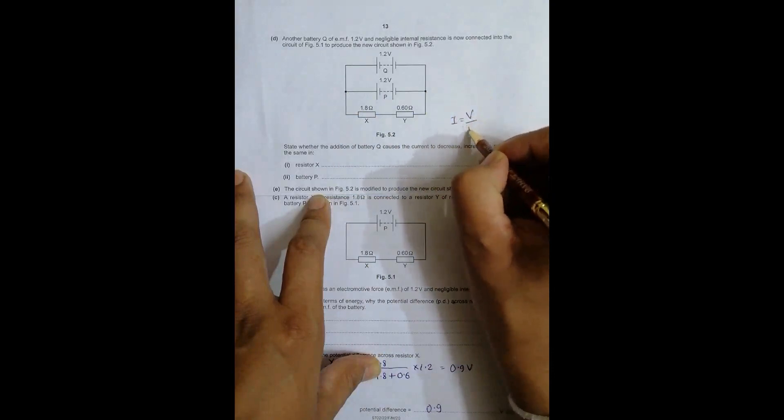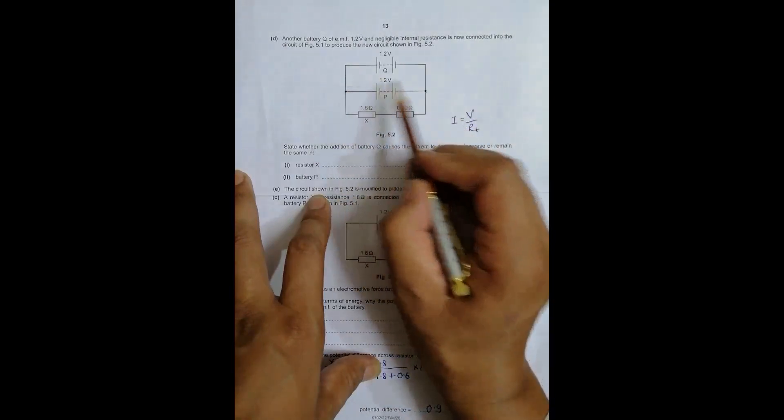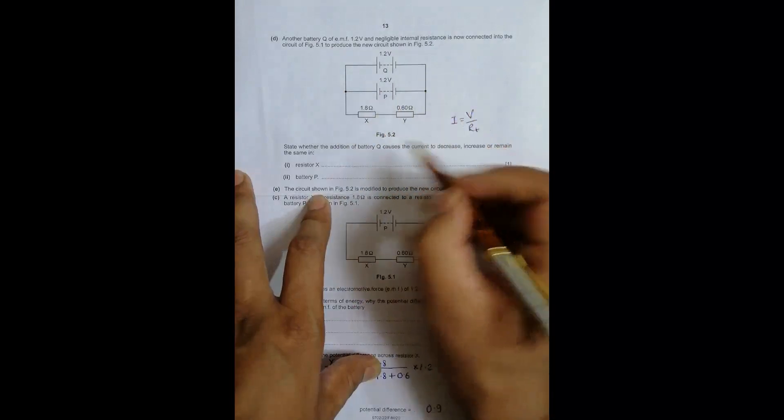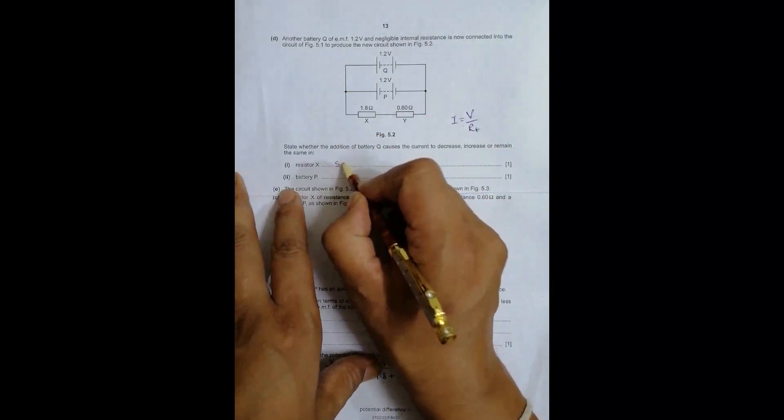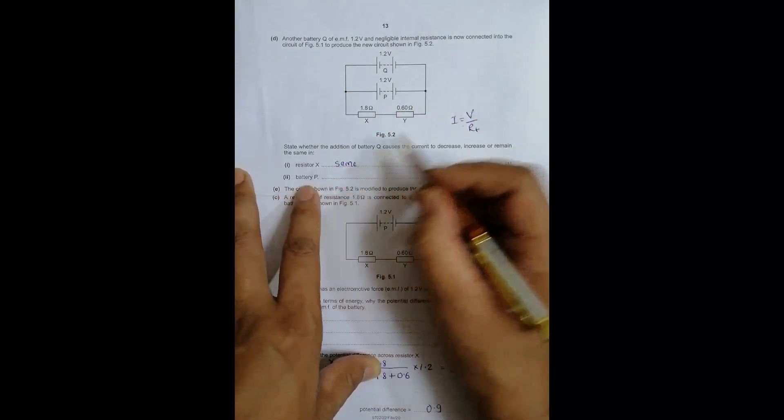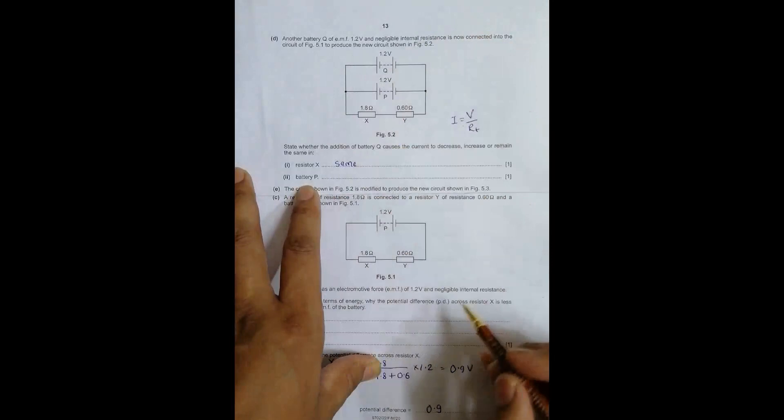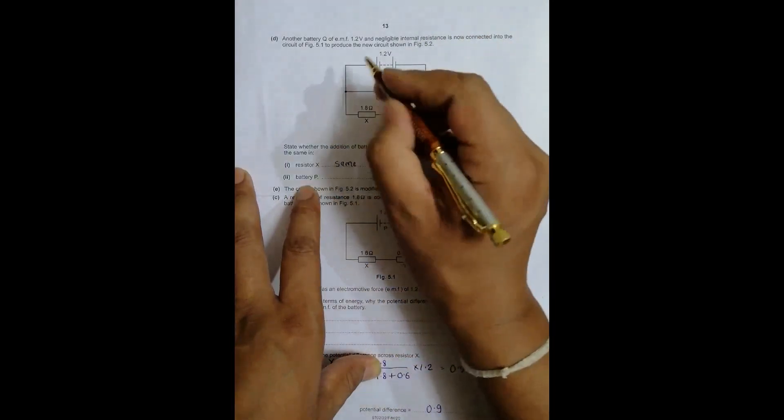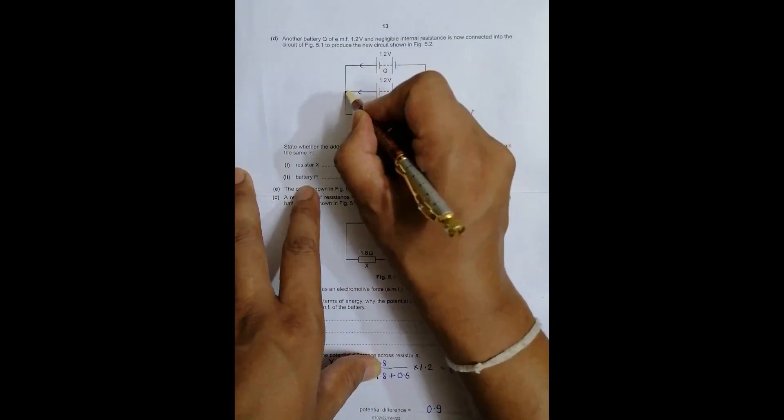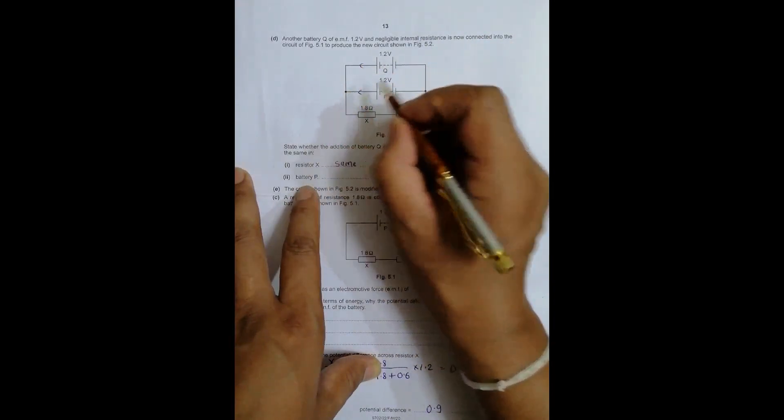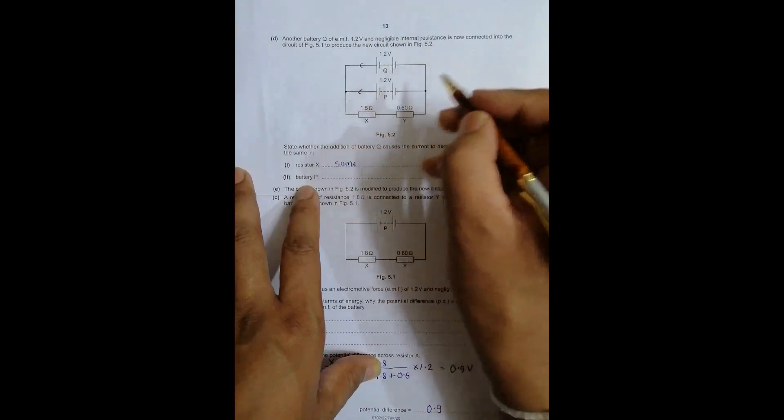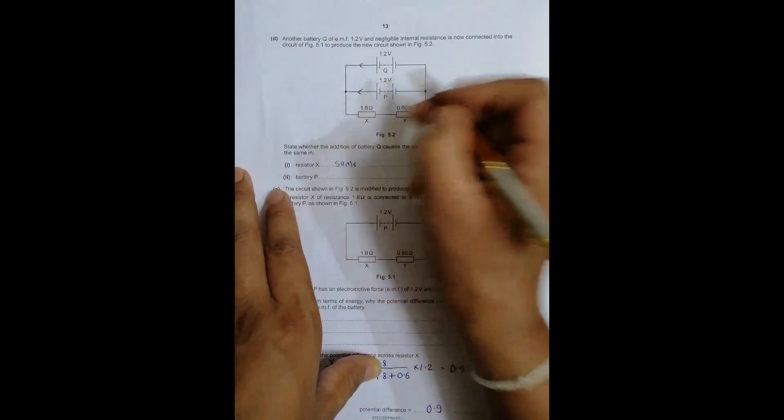The current in resistor X should be the same. Now for battery P, initially this current was contributed by P only. Now this current is contributed by both batteries which add and become that particular current. So the share of P should decrease because that share is equally supported by Q as well. That's why current in P should be less.